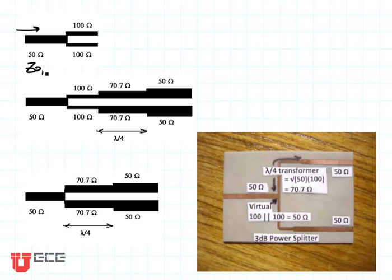If I want to divide the power evenly and have no reflection coefficient right here, what I want is 100 ohms in parallel with 100 ohms, which gives me an effective 50 ohms right here, and half the power is going to come out on this side and half is going to come out on that.